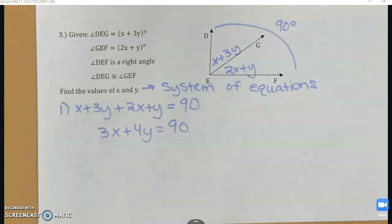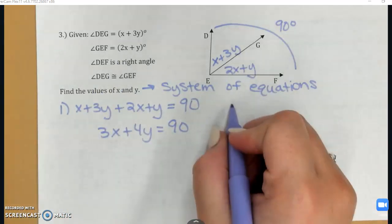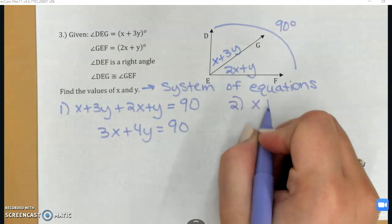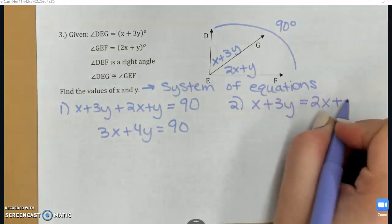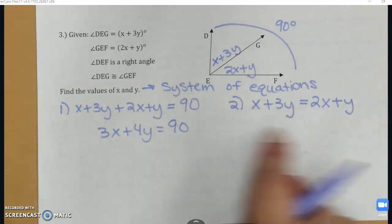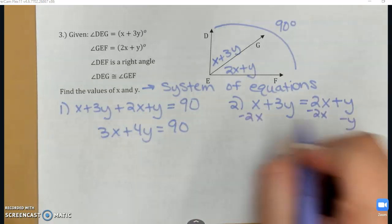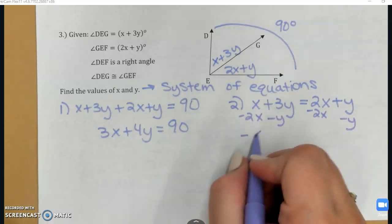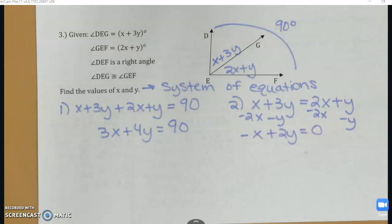Now I need another equation. Well, my two smaller angles are congruent to each other. So I can say that X plus 3Y is equal to 2X plus Y because if the angles are congruent, they have the same measure. Again, I want to clean this up a little bit. Let's get everything on one side. So I'm going to move over 2X and the Y, and that will leave me with negative X plus 2Y equals 0. There's nothing left on the other side.